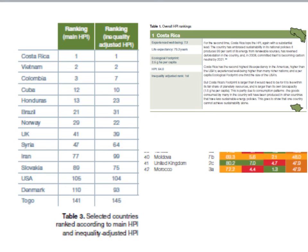The Happy Planet Index is essentially an efficiency measure, ranking countries on how many long and happy lives they produce per unit of environmental input. Interestingly, countries like Costa Rica and Vietnam head up the Happy Planet Index — countries that on most traditional measures of development would not rank very highly — whereas richer, more developed countries such as the US rank much lower because of their high ecological footprint.